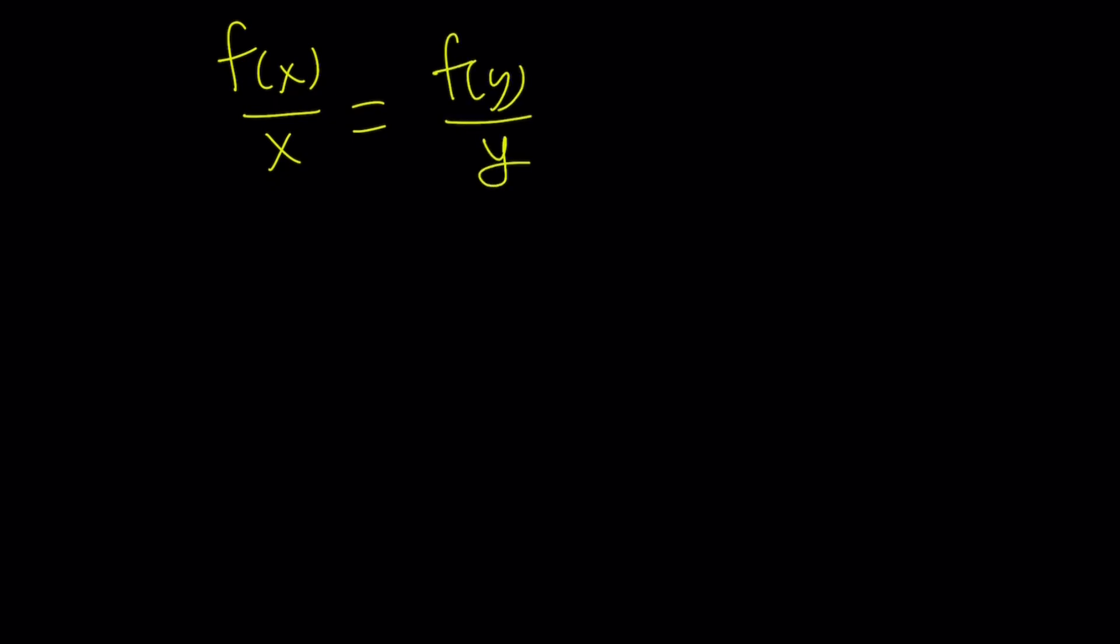Now, this is a really cool equation, because notice that we have different variables on either side, and we get the same equation. So, we can control the variables like we can use different values, and we always get the same thing. How is that possible? So, f of 1 over 1 is the same as f of 2 over 2, f of 5 over 5. This is only true for arbitrary values of x and y, only true if it's equal to a constant.